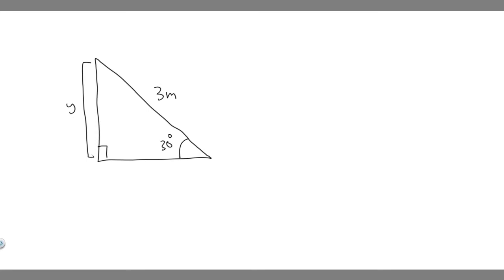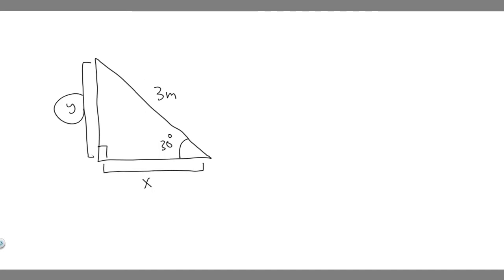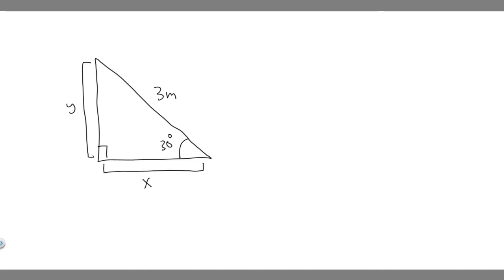And then we're also trying to find the side adjacent — so this is the side that's adjacent. I'm just going to call it x, and we're trying to solve for x. So this is the hypotenuse, this is the opposite side, and this is the adjacent side. What we're trying to do is solve for these, and the way we're going to do it is by using trig.